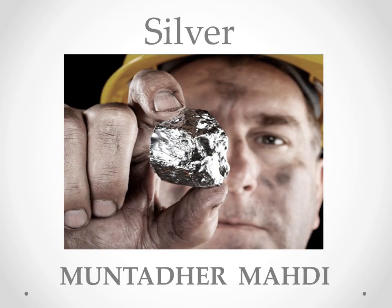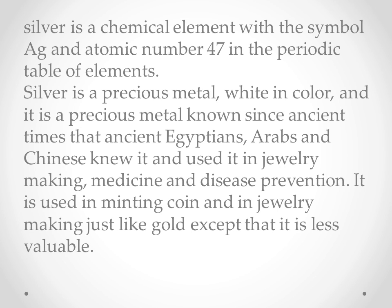Hello, I am Muntadhar Mahdi and I have explained about the silver element. Silver is a chemical element with the symbol AG and atomic number 47 in the periodic table of elements. Silver is a precious metal, white in color.